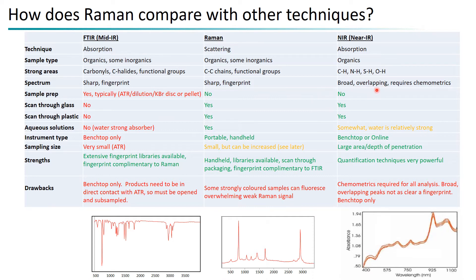Near-infrared uses broad overlapping bands and typically requires chemometrics — applying mathematical treatments to accentuate differences between samples. In terms of strengths: FTIR is most widely used with extensive fingerprint libraries available; Raman is extremely similar in that regard, but its big strengths are portability and lack of sample preparation. Near-infrared has better quantification capabilities because it is more representative of the sample and extremely reproducible for detecting small differences.